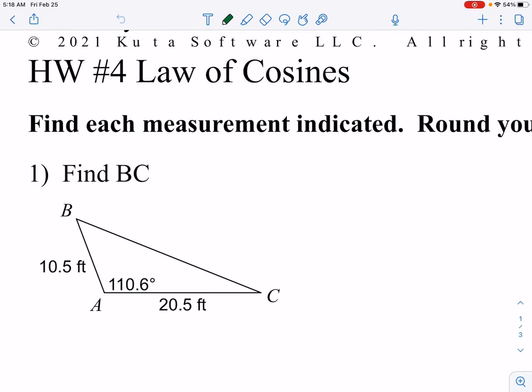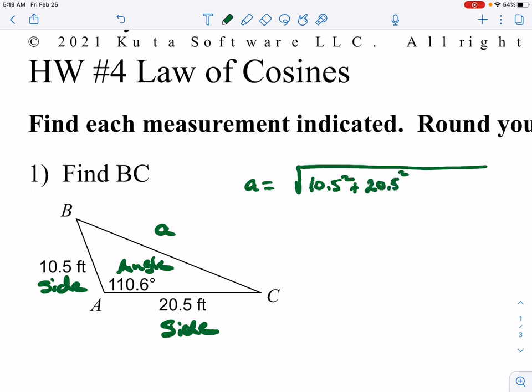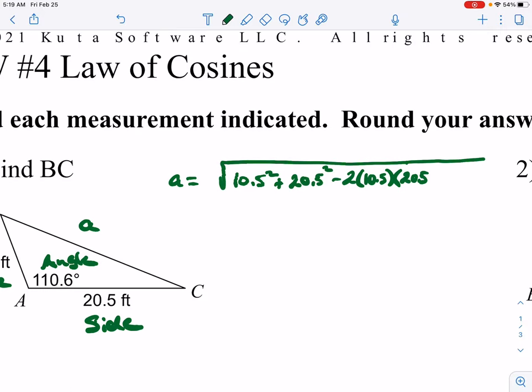Okay, here we know we're going to use law of cosines because we have a side angle side. Side angle side tells me to use law of cosines to find this side that's across from our angle. In this case again it's little a. We have 10.5 squared plus 20.5 squared minus two times 10.5 times 20.5 times the cosine of 110.6.